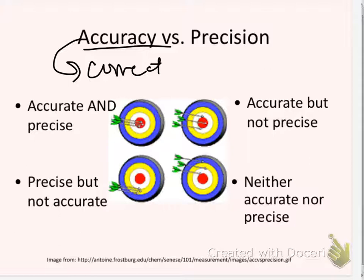What if your speedometer consistently — and I actually had a car that did this, my '82 VW Rabbit — consistently read about two miles per hour under how fast I was actually going? They'll give you three miles over the speed limit; they won't give you five. And I just learned to adjust my own behavior. It consistently was a little off. The amount of error was consistent. It was making the same kind of measurement again and again and again. That is precision.